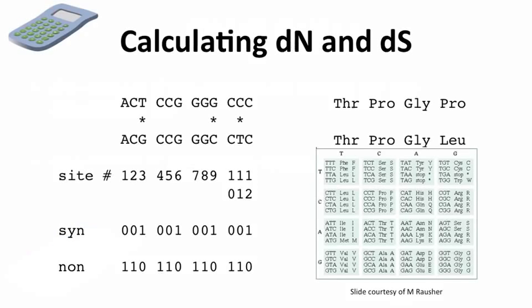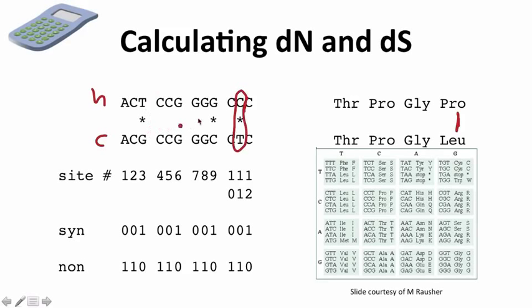Let's try this out. We have two DNA sequences, each with four codons. Let's say the top one is human and the bottom one is chimp. These are the DNA sequences, or the RNA, and these are the resulting amino acids that would come from them. We see there is an amino acid difference in that last one, probably resulting from this nucleotide difference. The two other variable sites are not actually changing the amino acids — ACT and ACG both code for threonine.